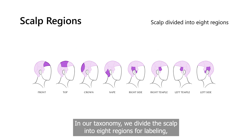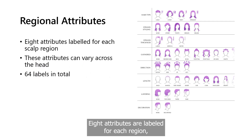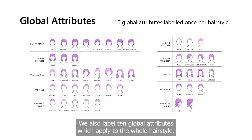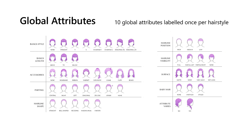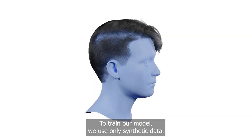In our taxonomy, we divide the scalp into 8 regions for labelling, adapted from those used by hair stylists and transplant specialists. Eight attributes are labelled for each region, meaning they can be varied across the head. We also label 10 global attributes which apply to the whole hairstyle, so each style can be represented with a taxonomic annotation containing 74 labels.